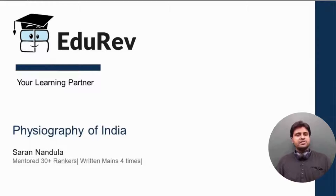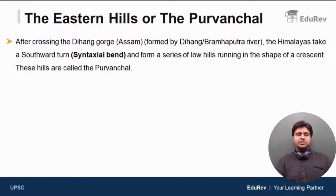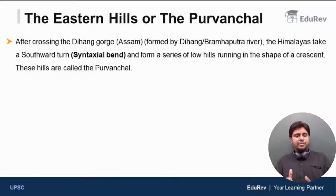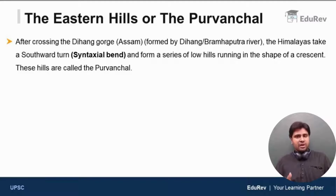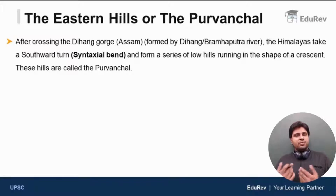In the previous video, we discussed the Trans-Himalayas. Now in this video, we will be discussing the Eastern Hills or the Purwanchal. Previously, we learned that the entire Himalayan region can be divided into three parts: first, the Himalayan ranges; second, the Trans-Himalayas; and third, the Eastern Hills or Purwanchal. We were done with Trans-Himalayas, so now let us try to understand the Eastern Hills.